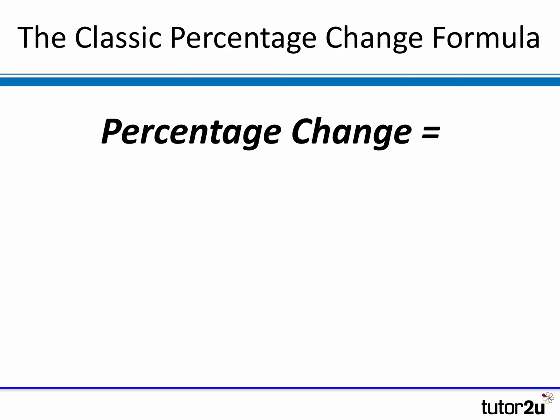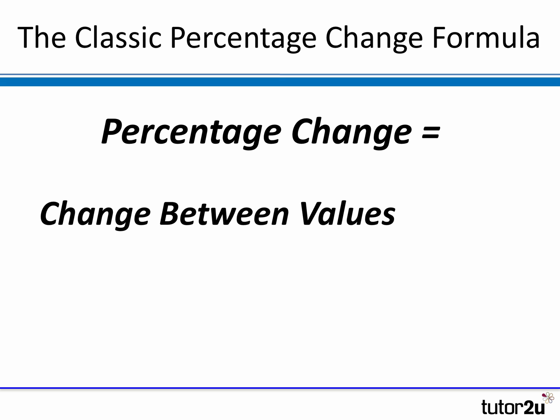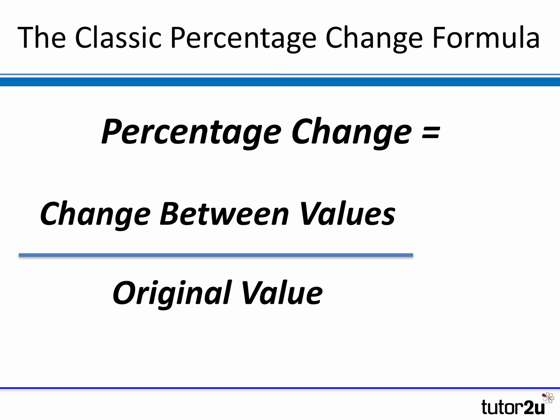So how do we calculate a percentage change? There are two methods. I will show you both and give a quick illustration of each — you can use either. The most important thing is, whenever you're calculating percentages, to show your working so the examiner can see where you've got your numbers from. The classic formula is to take the change between the two values you're looking at, divide that change by the original value — so if you're looking at two revenue numbers, you'd calculate the difference between the two values and divide by the original value — and of course, to express that as a percentage, you multiply by 100.